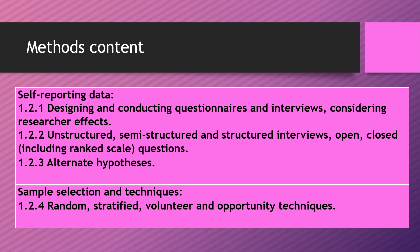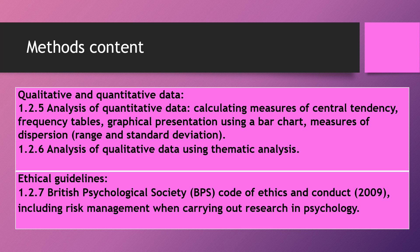We're also going to look at sampling techniques and the use of random, stratified, volunteer and opportunity sampling. In the last lesson, we looked at qualitative and quantitative data and their strengths and weaknesses. You should also have recapped on quantitative data — calculating central tendency, measures of dispersion, tables and bar charts, discrete and continuous data, when to use a statistical test, and ethical considerations from the British Psychological Society Code of Ethics. We'll also cover thematic analysis, completing all methods associated with social psychology.